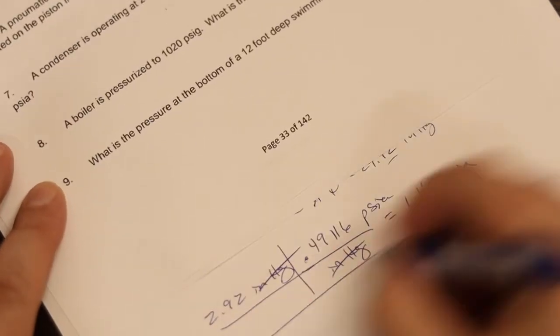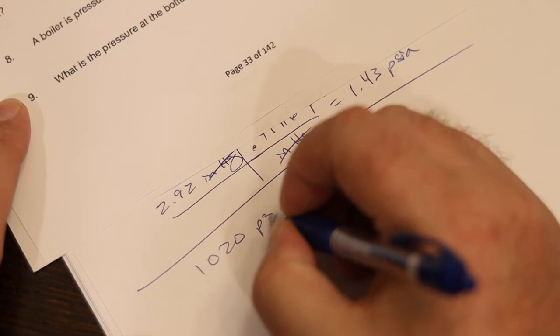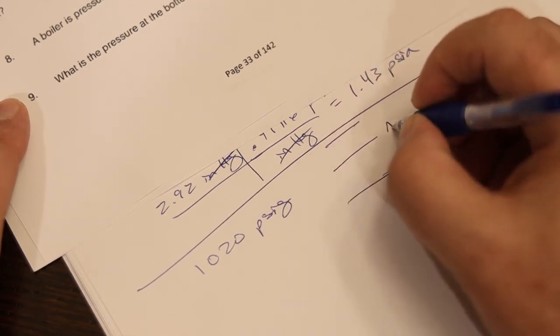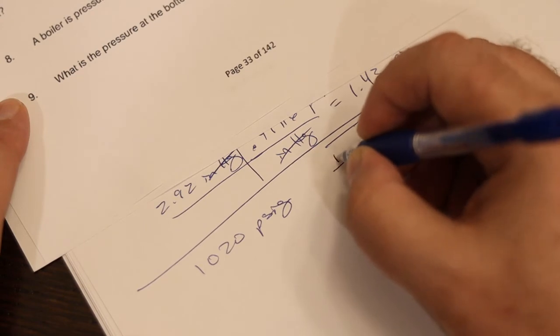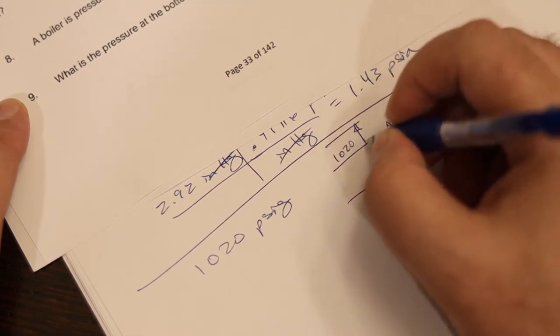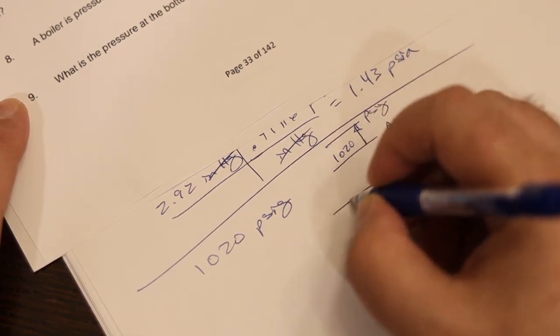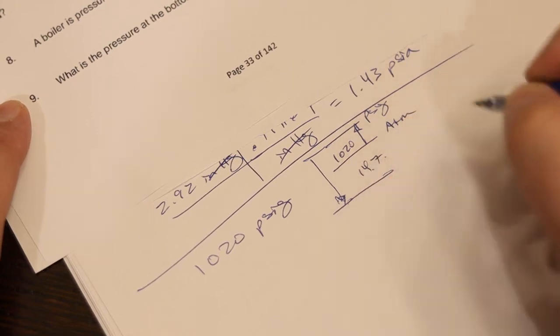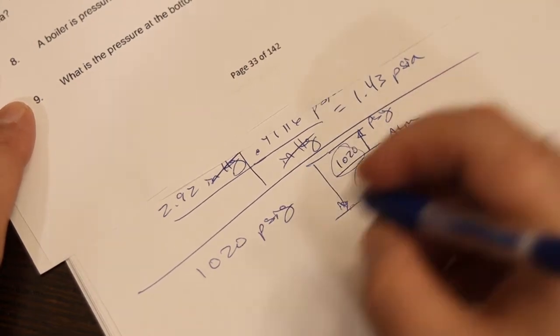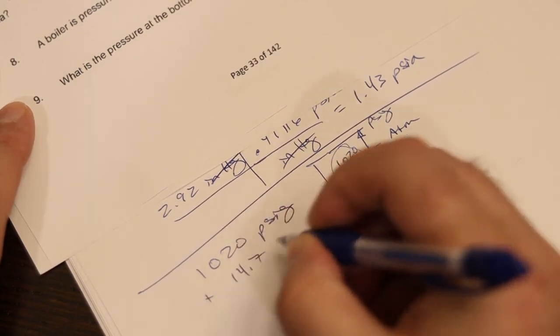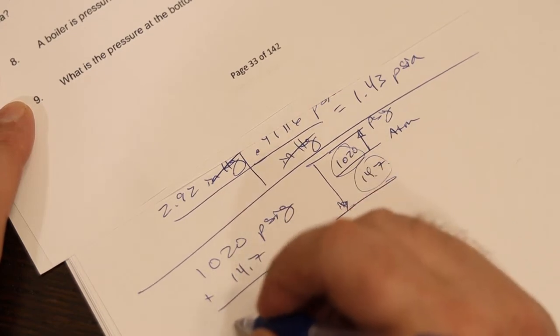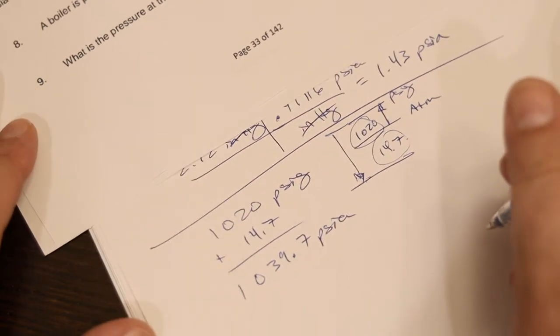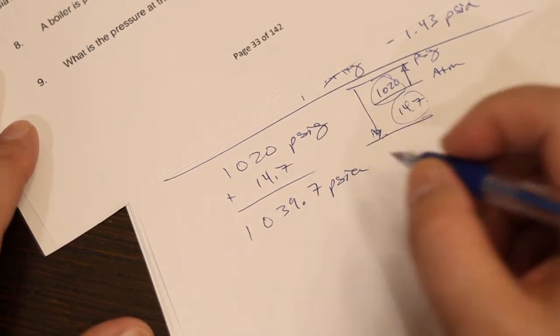Batteries dying. This is another easy one. So 1,020 pounds per square inch gauge. Which if you just draw this out. Right. So this is atmospheric pressure. And this is saying 1020 pounds above atmospheric pressure. And that's PSIG. But we want to know the absolute pressure. So we add the 14.7 pounds to the 1020. So plus 14.7. And that gives us 1039.7 PSIA. Those hopefully those pressure ones are easy.